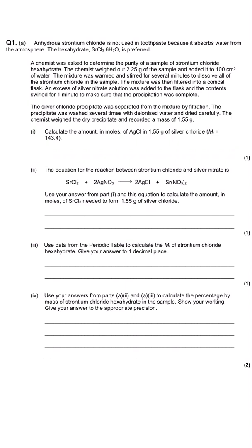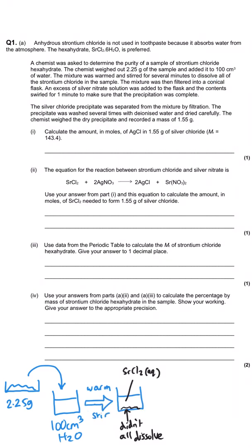This first question uses anhydrous strontium chloride. We've been told that it's used in toothpaste but it absorbs water in the atmosphere and that the hexahydrate form of the same chloride is preferred. Then a chemist has been asked to determine the purity of a sample of strontium chloride hexahydrate. They weigh out a particular mass of the sample, add it to 100 cubic centimeters of water. The mixture is then warmed and stirred for several minutes to make sure all of that strontium chloride is dissolved. As I've been saying that I've been drawing a diagram of what's been happening in this experiment just so we can really understand what's been happening.